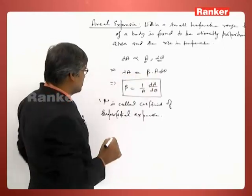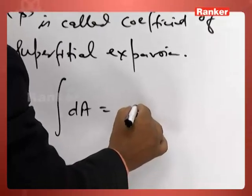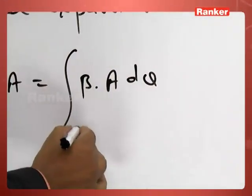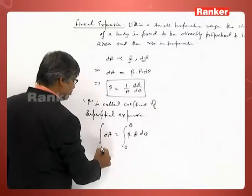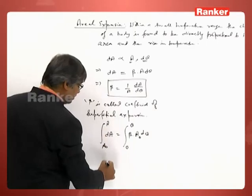If I integrate this, I will get dA as beta times A d theta. Suppose theta goes from zero to theta, and at zero area was A naught and final A.